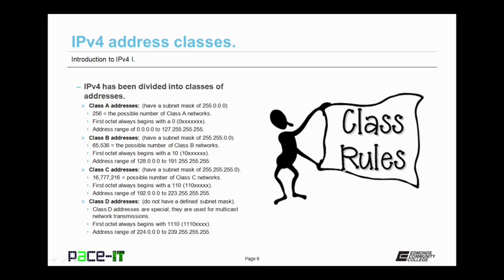Now we're almost done, but let's talk about class D addresses. These do not have a defined subnet mask. That's because they are a special class of addresses. Specifically they're used for multicast network transmissions. The first octet on the left always begins with a one one one zero. So the first four bits of that left octet are always one one one zero. It has a possible address range of 224.0.0.0 up to 239.255.255.255.